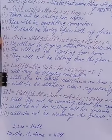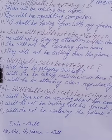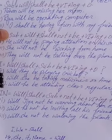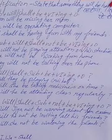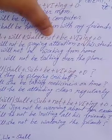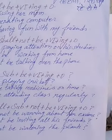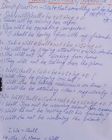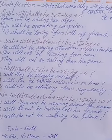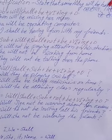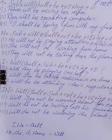Now for negative sentences — first you use the subject, then will or shall according to the subject, then not, then be, then the verb plus ing, then the object. A lot of students make the mistake of putting not after be — you have to put not before be. For example: he will not be paying attention on his studies. She will not be working from home. They will not be talking over the phone.